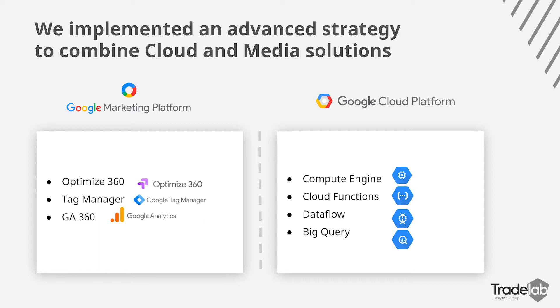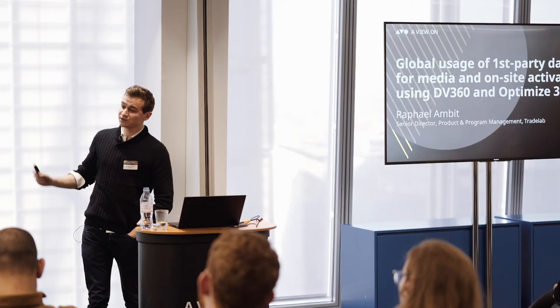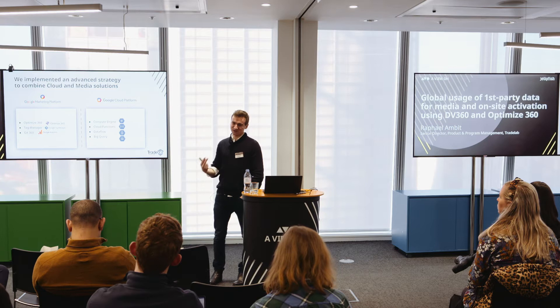Before getting into it, I'll talk about the tools we used. On the GMP side, we used Optimize 360 to make a dynamic allocation of landing pages for different targeted users. We used Tag Manager to collect information and manage the tagging plan on the website, and GA 360 to understand what's happening on the site-centric part. We also used DV360 for media activation. On the tech side: Compute Engine, Cloud Functions on GCP, Dataflow, and BigQuery to process, analyze, and inject data back into GMP.